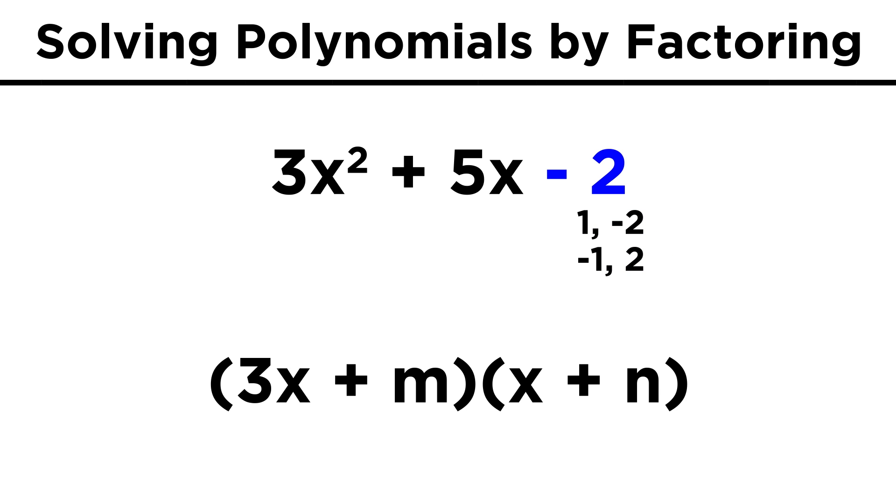We have negative two, so luckily there are only two options. It's either positive one and negative two, or negative one and positive two. So we have to ask ourselves, which pair of factors will allow us to multiply one factor by 3x, and the other by x, and add those together to get 5x.